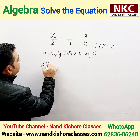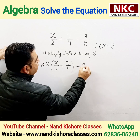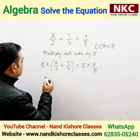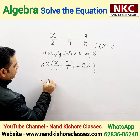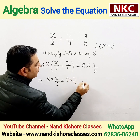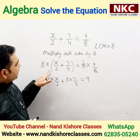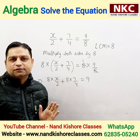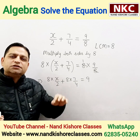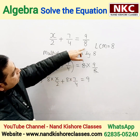So 8 multiplied gives you X upon 2 plus 7 by 4 on the left side, and on the right side, 8 multiplied by 9 upon 8. Now distributive property is used — this 8 will be multiplied with both terms inside. It becomes 8 times X over 2, plus 8 times 7 over 4. And notice that 8 and 8 cancel on the right side, leaving only 9. Each and every term in the equation is multiplied by 8.